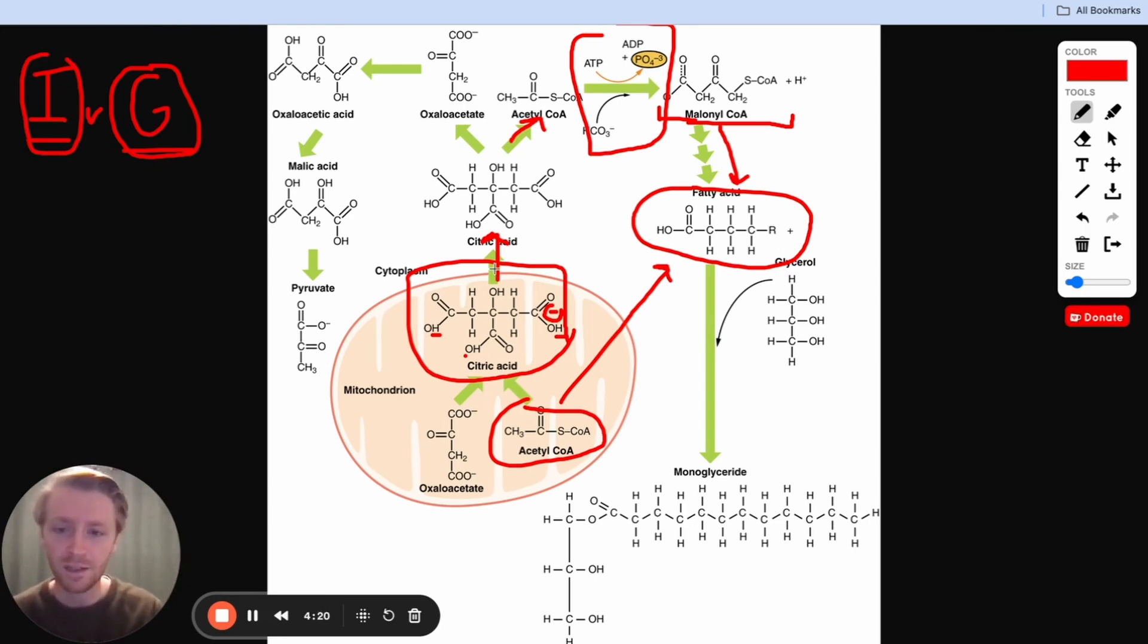On the other hand, another type of regulation that we have going on here is we have two molecules that are an important part of this process. Citrate, which we talked about and the fatty acids themselves right here. So you can imagine if you have a ton of fatty acids floating around, our body's not necessarily going to want to make more fatty acids. Like if you're making lunch for your family and you're making burgers, you make five,